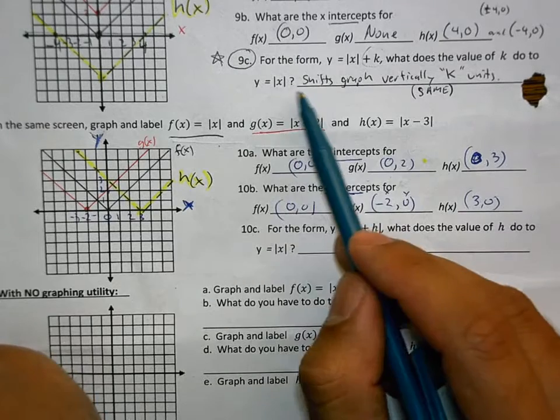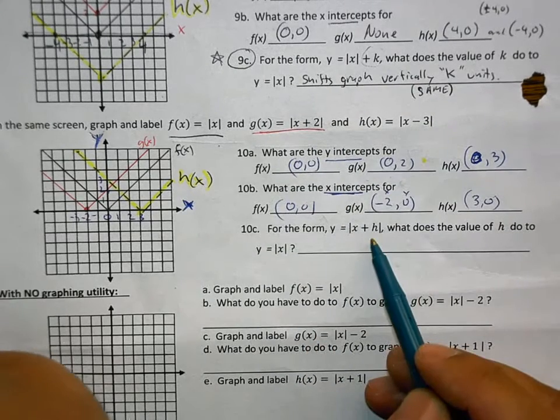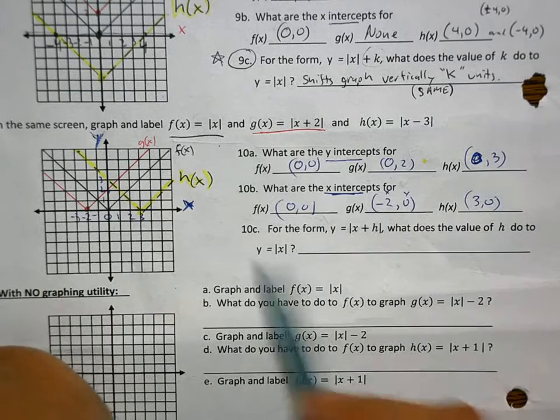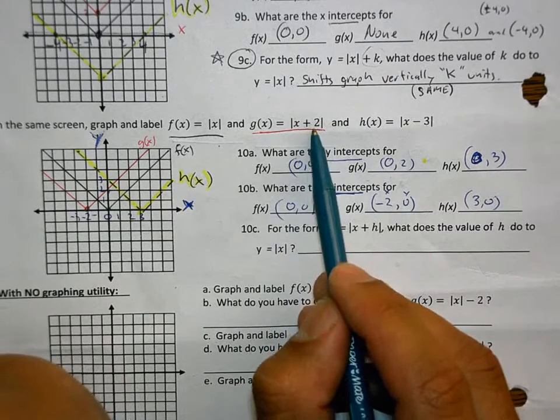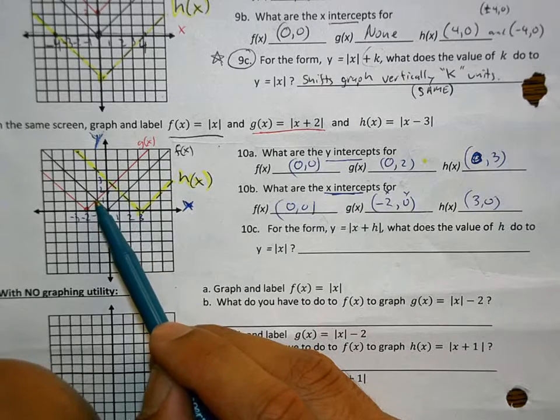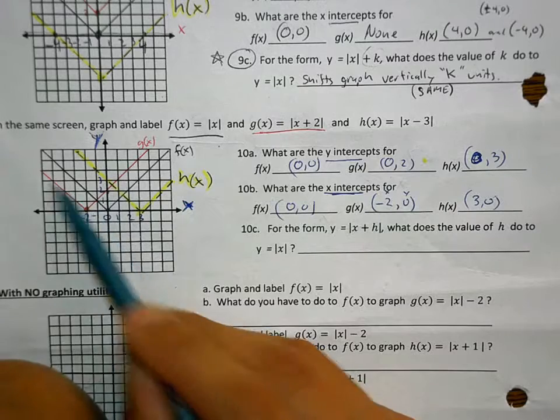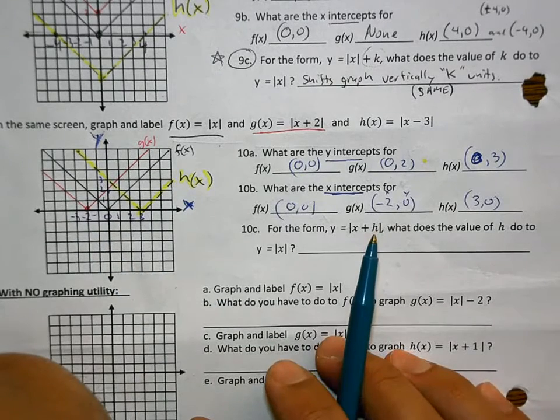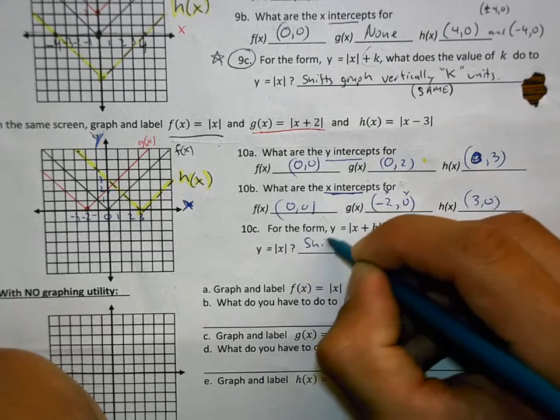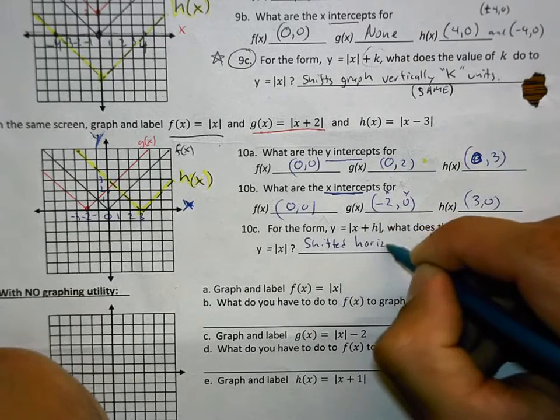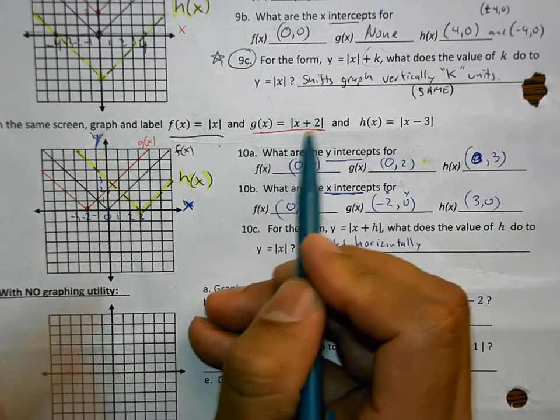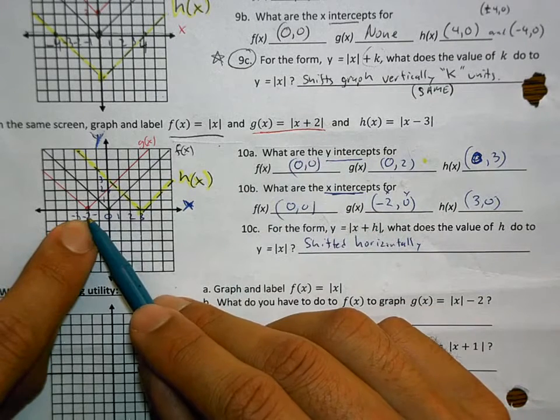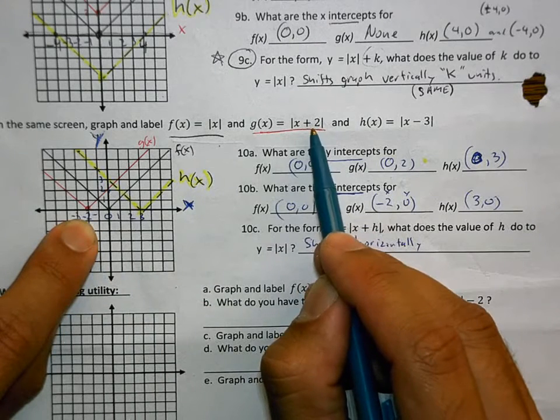Earlier, for 9c, we wrote down that this shifted the graph vertically by k units. But when we have an h, and it's inside the function, what does the value of h do to y equals absolute value of x? Look at this plus 2. For the graph, which way did the graph go? Up. No, it didn't go up. From this black line to the red line. Where did it go?